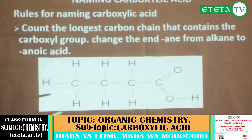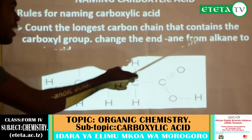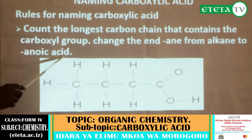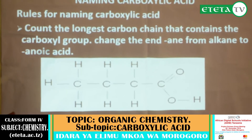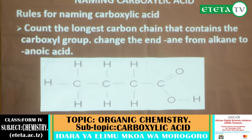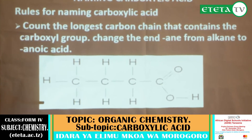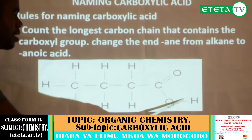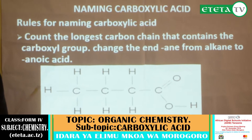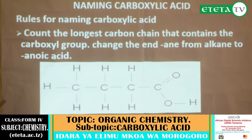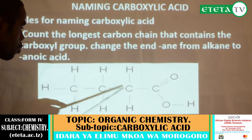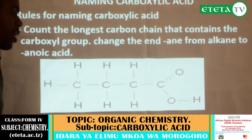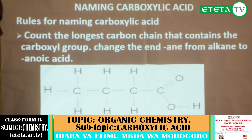For example, for a chain with only one option — 1, 2, 3, 4 — the ending '-ane' from alkane is replaced by '-anoic acid'. For example, methane becomes methanoic acid; ethane becomes ethanoic acid. Counting starts from the carbon which carries the carboxyl group. Because there are four carbons, the name of this compound will be butanoic acid.